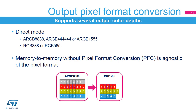The output pixel format converter generates the color for the destination independently from the source. There is no indirect mode in output, as this would imply having to calculate a color lookup table, or CLUT. Nevertheless, memory-to-memory operations without pixel format conversion can copy data independently of their formats.